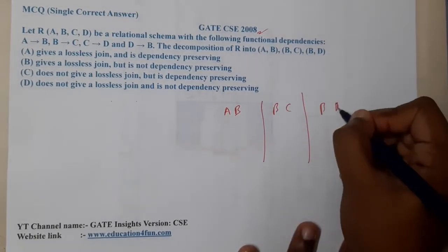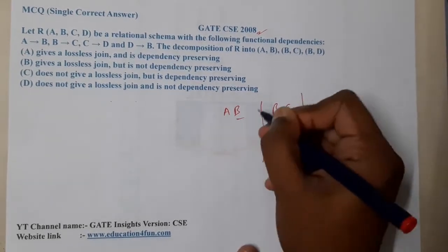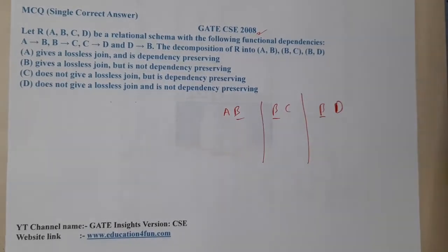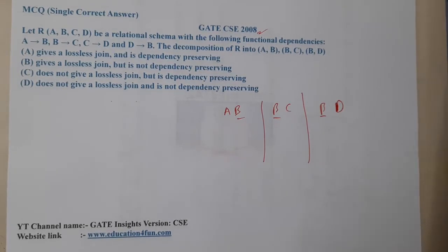Based on my observation, b is the common attribute in all of them. So if we are sure that b is 100% unique, we can say that this is a lossless join.